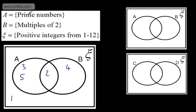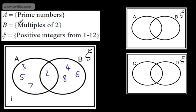6 is not a prime number, so it's not in A, but it is a multiple of 2, so it is in B. 7 is a prime number, but not a multiple of 2. 8 is not prime, but it is a multiple of 2. 9 is neither prime nor a multiple of 2, so it's not a member of A or B — we'll put it on the outside.